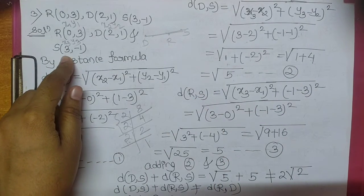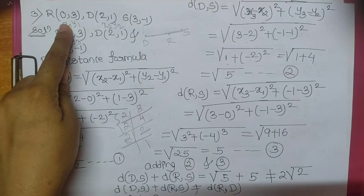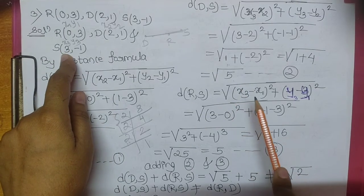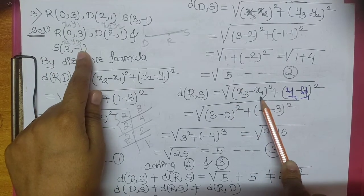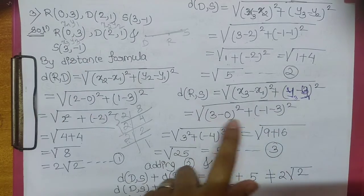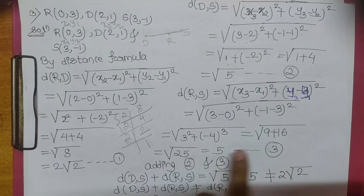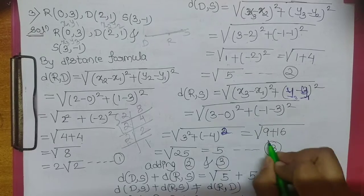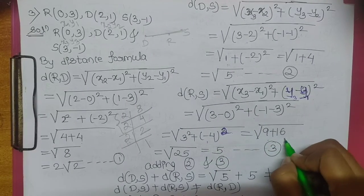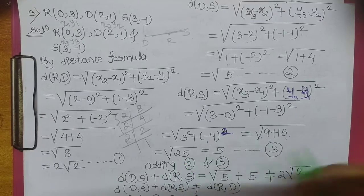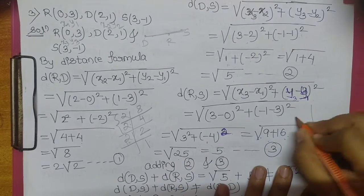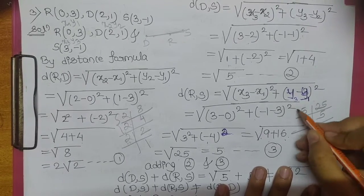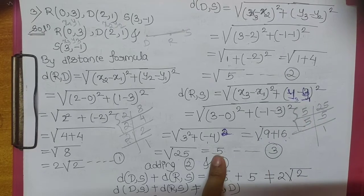Now RS. RS = square root of (x3 minus x1) ka square plus (y3 minus y1) ka square. x3 = 3, x1 = 0, y3 = minus 1, y1 = 3. 3 minus 0 = 3 ka square, minus 1 minus 3 = minus 4 ka square. 3 ka square 9, minus 4 ka square 16. 9 plus 16 = 25. Square root of 25 = 5.